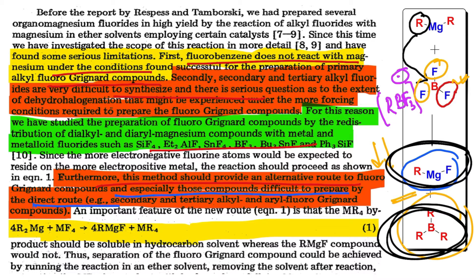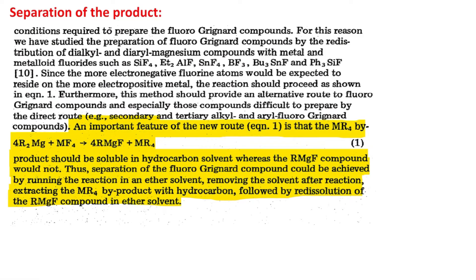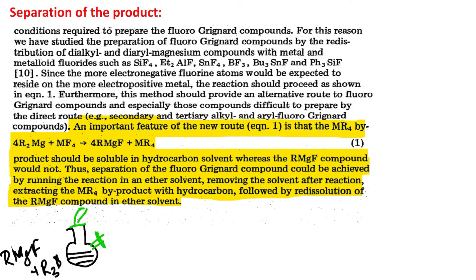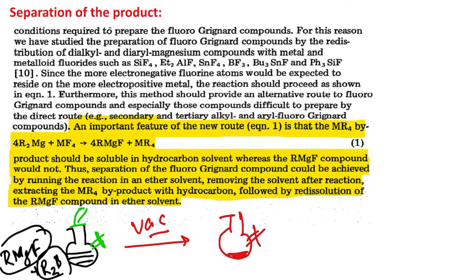Now there is another issue: the trialkyl boron R₃B byproduct — we don't want this molecule. How do we purify and get pure RMgF? The strategy is: take the mixture of RMgF plus R₃B in a Schlenk flask under inert conditions. Under vacuum, evaporate to dryness — this converts everything into a solid paste. The solid paste may contain both RMgF and R₃B.